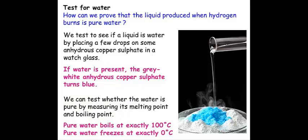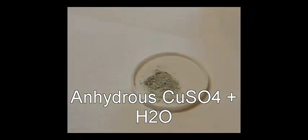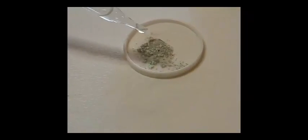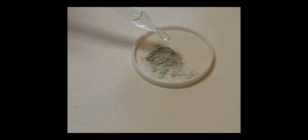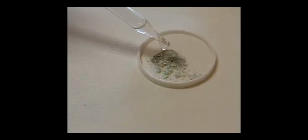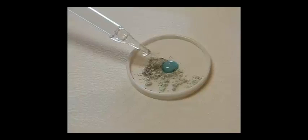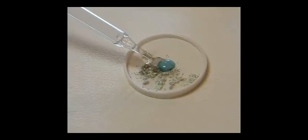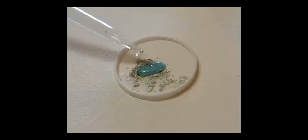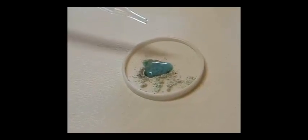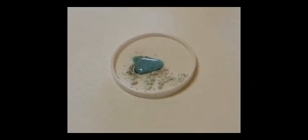How can we prove that gas being produced from combustion of hydrogen is in fact just pure water? There are two methods. First one, to prove that water is present, is to add a few drops of liquid to anhydrous copper sulfate. Anhydrous copper sulfate means it does not have water. If water is present, the gray-white anhydrous copper sulfate will turn blue.